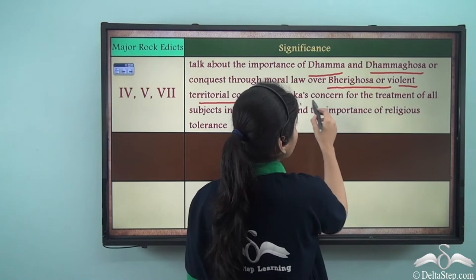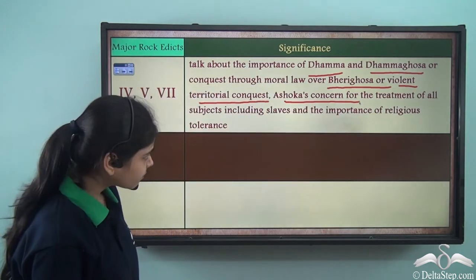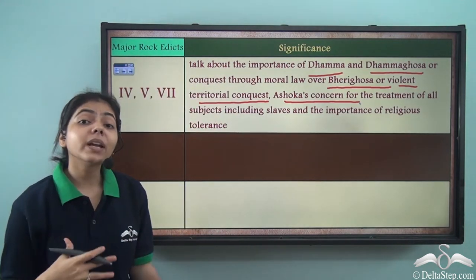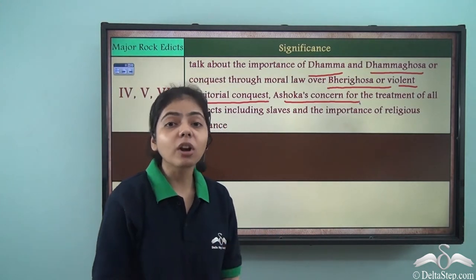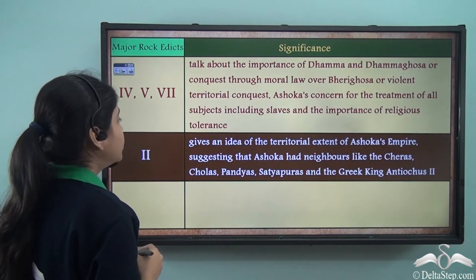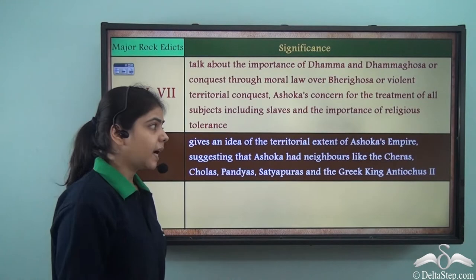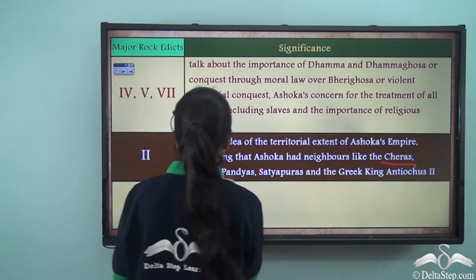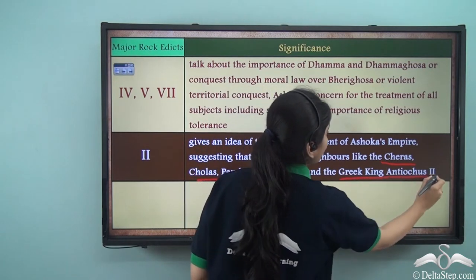These edicts also tell us about Ashoka's concern for the treatment of all subjects, including slaves, and about the importance of religious tolerance — showing that Ashoka was very much concerned that all subjects were treated equally. The major rock edict 2 gives an idea of the territorial extent of Ashoka's empire, suggesting that he had neighbours like the Cheras, Cholas, Pandyas, Satyapuras, and the Greek king Antiochus II.